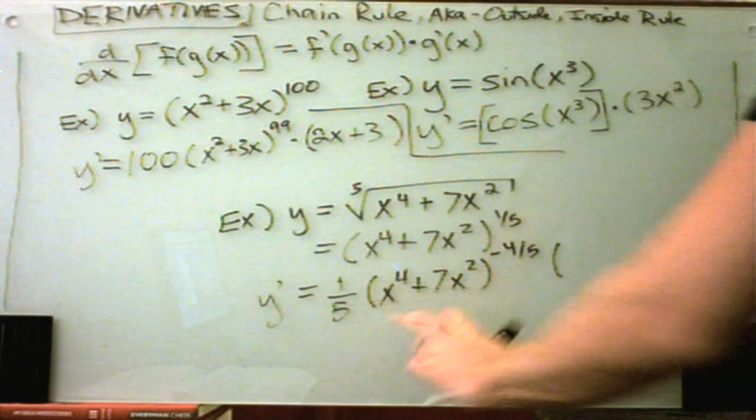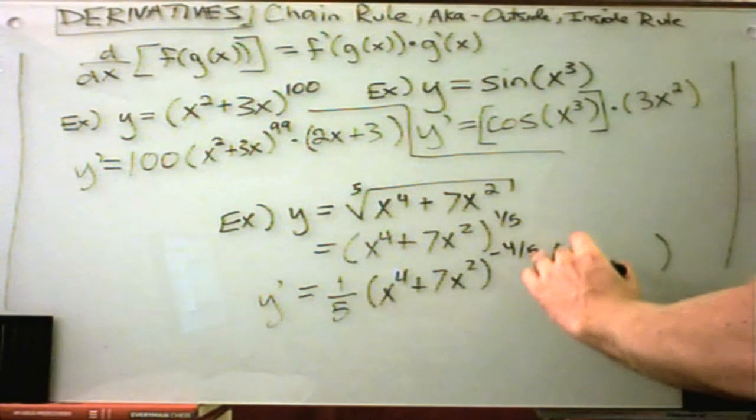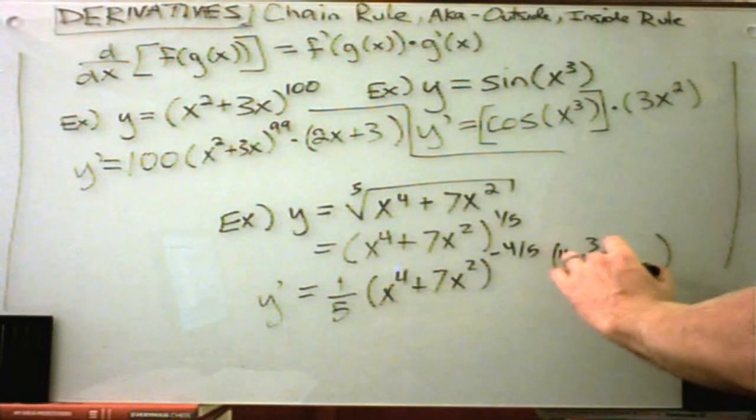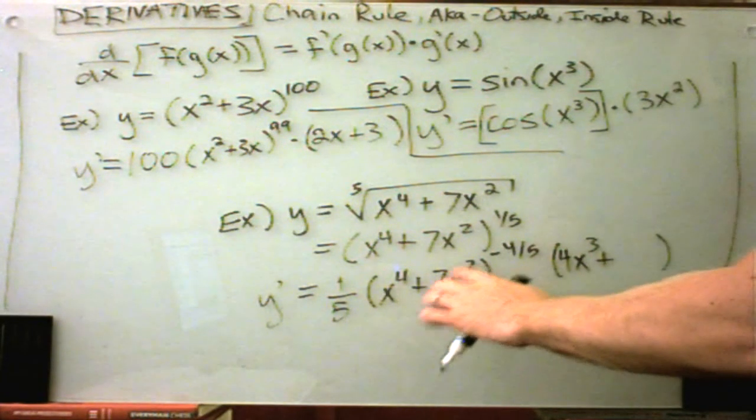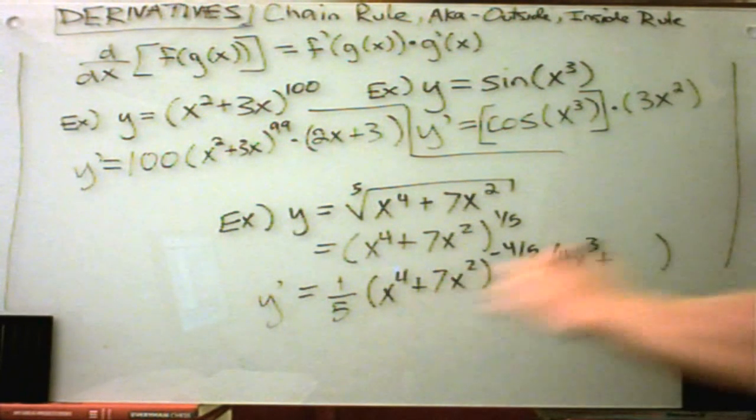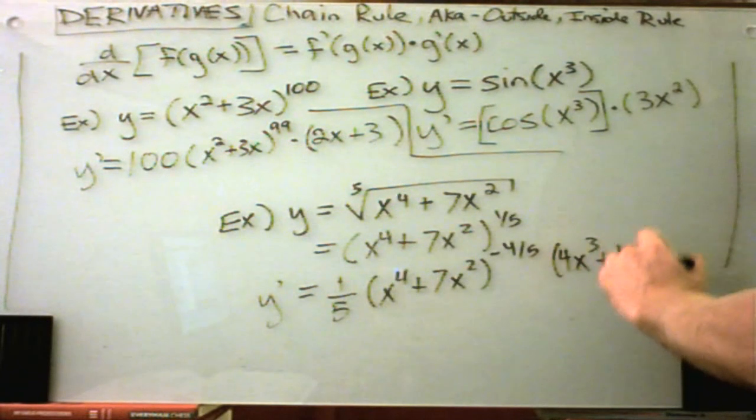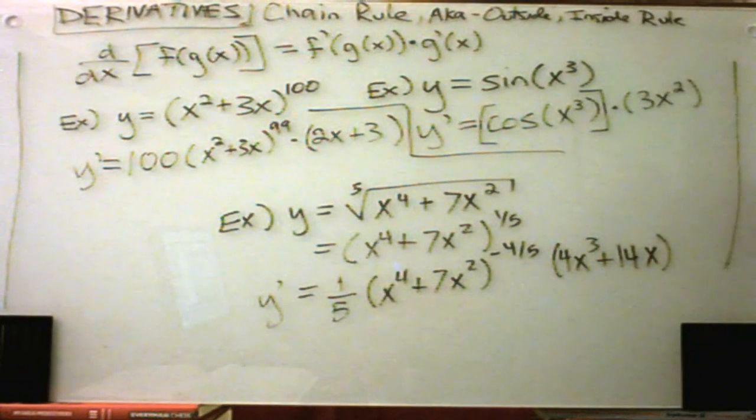So the derivative of x to the fourth will be 4x cubed. And the derivative of 7x squared. The 2 will come out front, get multiplied by the 7. And that will give us 14x to the first power. And that's all there is to it.